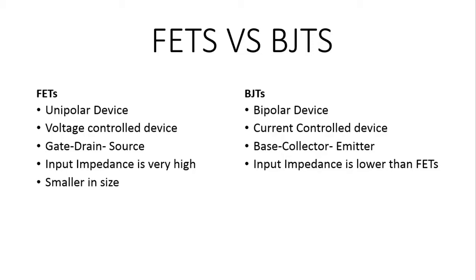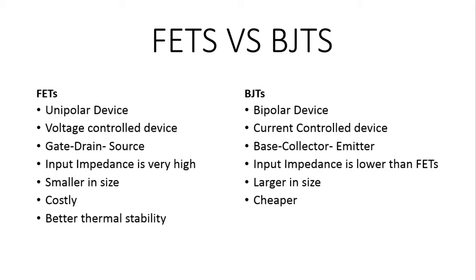FETs are much smaller in size; that is why they are preferably and extensively used in IC circuits, whereas BJTs are comparatively larger in size. The FET is more costly than the BJT, but the FET is more thermally stable. The sensitivity of BJT is higher compared to FETs, and the FET also has low power consumption.